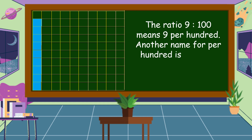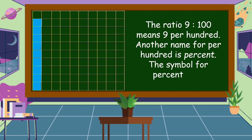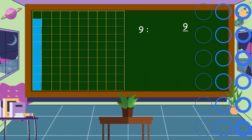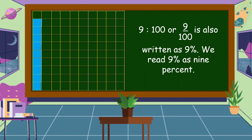Another name for per hundred is percent. This is the symbol for percent. 9 is to 100, or 9 per hundred, is also written as 9 with the percent sign. We read this as 9 percent.